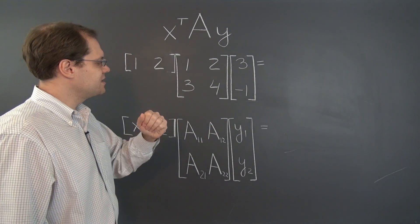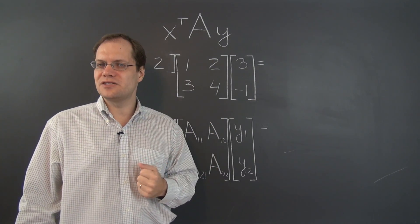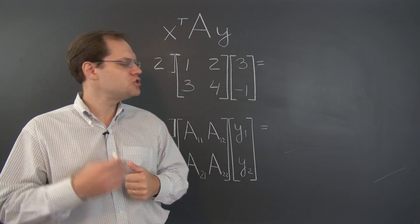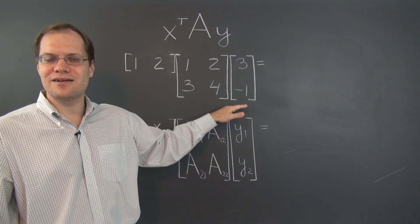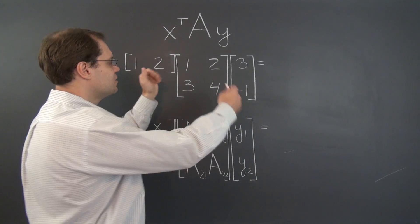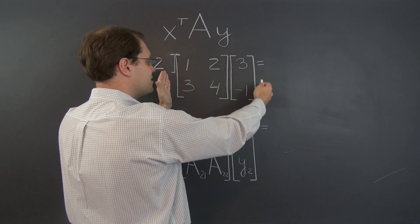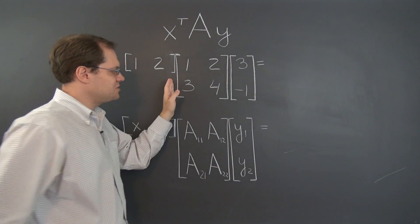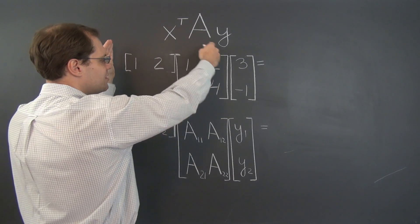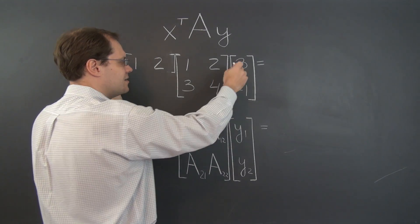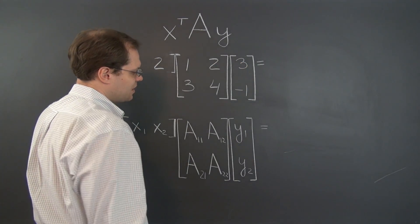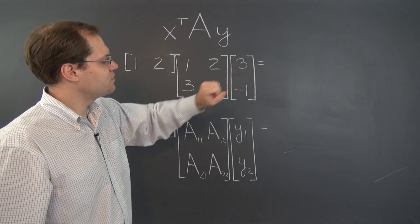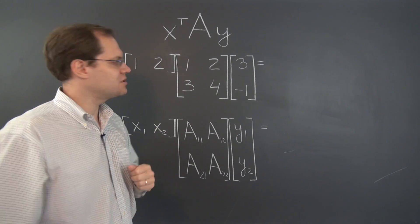So let's start with this example. You should probably pause the video and figure out this product on your own, and then come back and check with us. Just note that you can carry out this double product in two different ways: you could multiply these two matrices first and then multiply the result by this matrix on the left, or these matrices first and then by this matrix on the right. Thank goodness we have associativity. I'm going to multiply these two matrices first, but you can do it the other way.